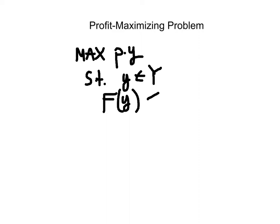So the profit maximizing problem for the firm is to maximize PY such that the production plan Y is technologically feasible, must be in the production set. Another formulation using the transformation function is that F of Y must be less than or equal to zero.